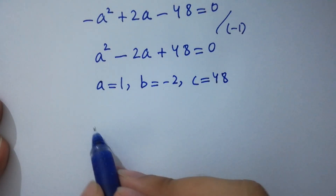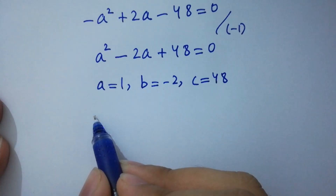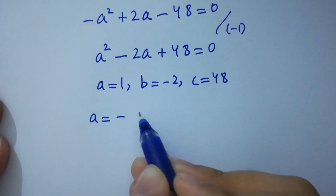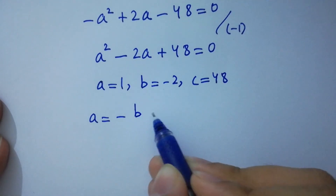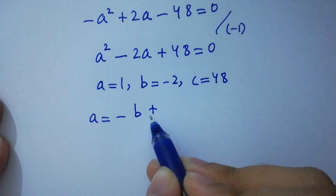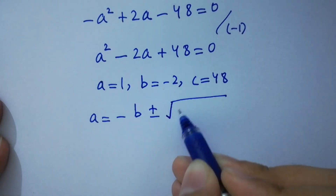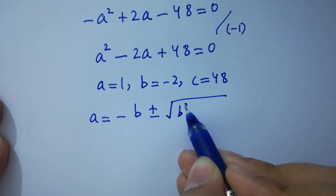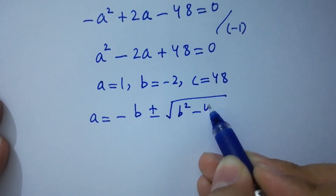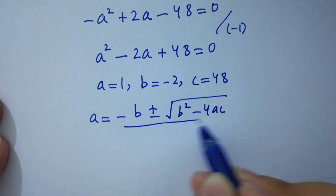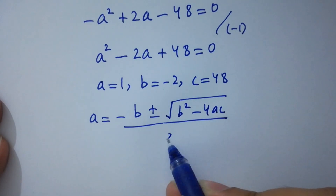Apply the quadratic formula: a equals minus b plus or minus square root of b squared minus 4ac, all over 2a.